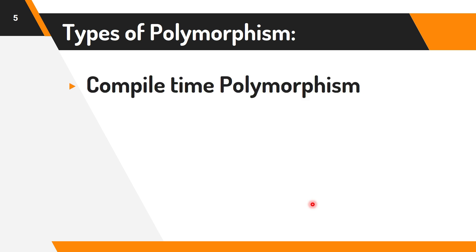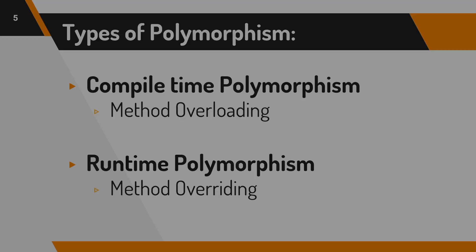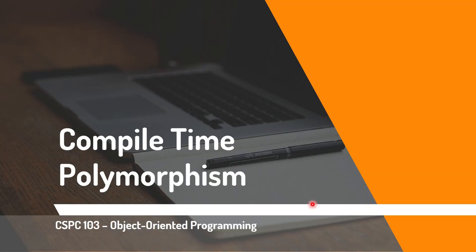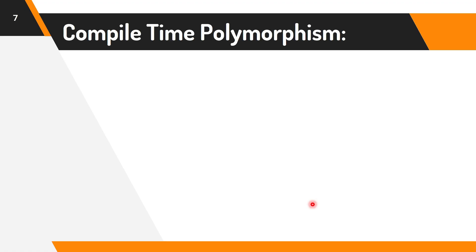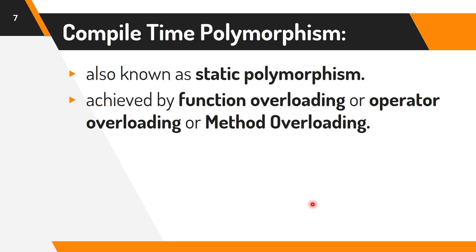There are two types of Java polymorphism. The first one is compile-time polymorphism, also known as method overloading. And the other one is runtime polymorphism, or method overriding. Compile-time polymorphism is also known as static polymorphism. This type of polymorphism is achieved by function overloading or operator overloading, more commonly known as method overloading.